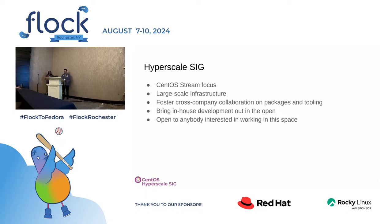The Hyperscale SIG is a SIG within the CentOS project focused entirely on CentOS Stream — we only produce artifacts for Stream, mostly because nobody else volunteered to produce artifacts for RHEL, though we're not opposed to doing that. The goal is to focus on enablement for large-scale infrastructure, with large-scale loosely defined — it's mostly meant as a space for players from various companies to come together and collaborate on tooling, packaging, and things around this space.